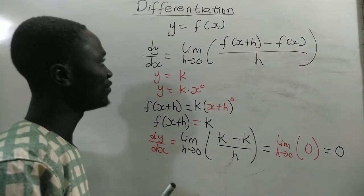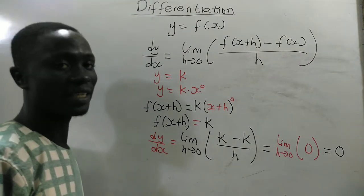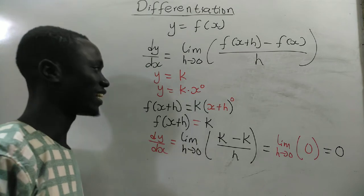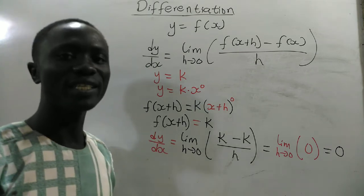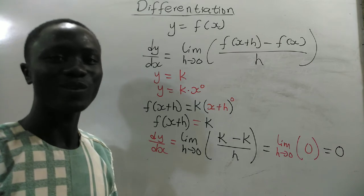So, this shows that the derivative of a constant is 0. And that is how we have shown using the first principle. Please subscribe to my channel. Bye-bye.